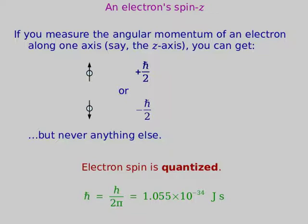This leads to a whole bunch of consequences, including things you've heard of like the Pauli exclusion principle. The fact that you can put two electrons in one orbital is intimately linked to the fact that there are two different possible z-spin states for the electron. Electron spin is quantized — it comes in steps of ℏ. There are only two possibilities: z-component equals +½ℏ or −½ℏ, never anything in between.